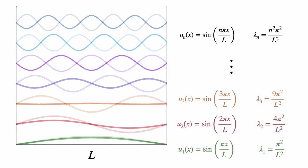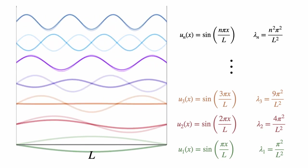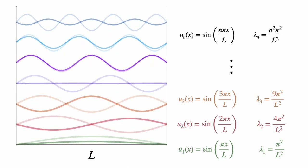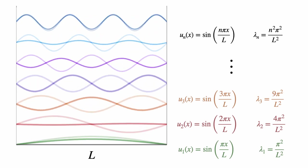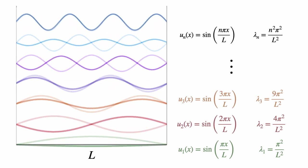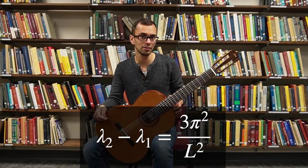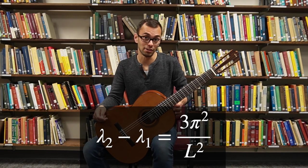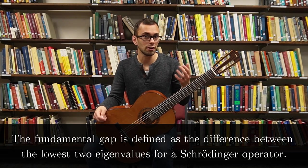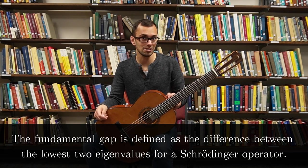At least for a one-dimensional string, it's possible to answer this question in an explicit way. The eigenvalues of the Laplacian are π²n²/L². As such, the first eigenvalue is π²/L² and the second is 4π²/L². The difference between these two values is 3π²/L². This quantity is known as the fundamental gap, and plays an important role in the analysis of the Laplacian.